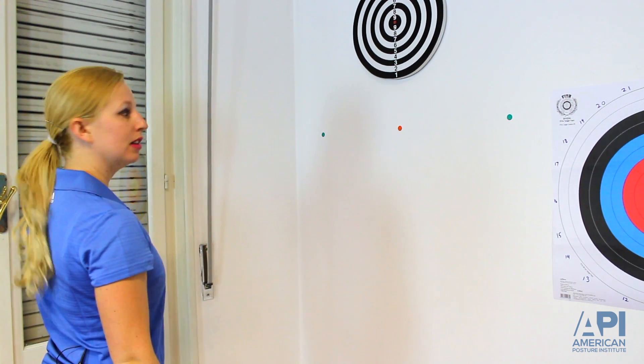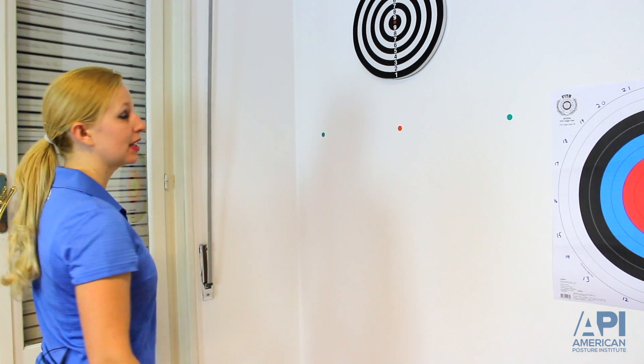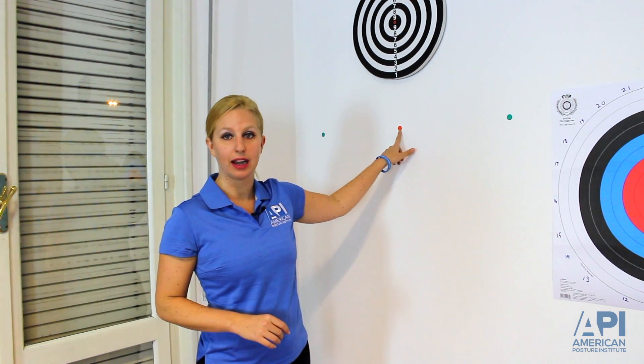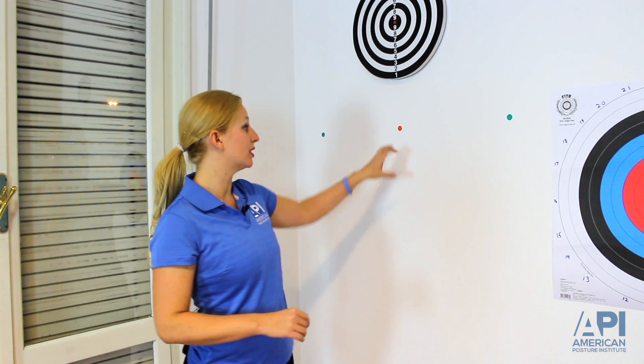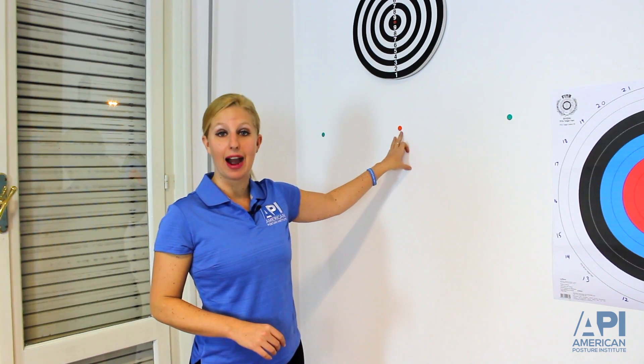It's going to look like this. That's going to be working your right horizontal canal. The whole time that I'm moving my head, I'm looking right here at the dot. By having that target or something for them to look specifically at, it helps the patient keep their eyes focused.